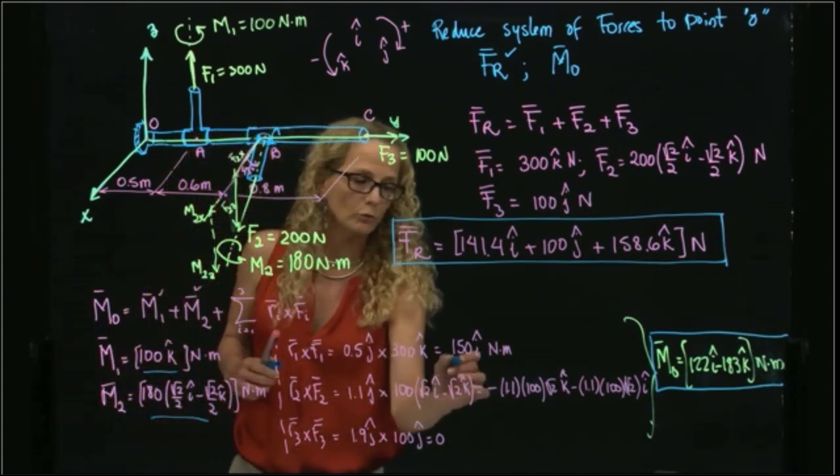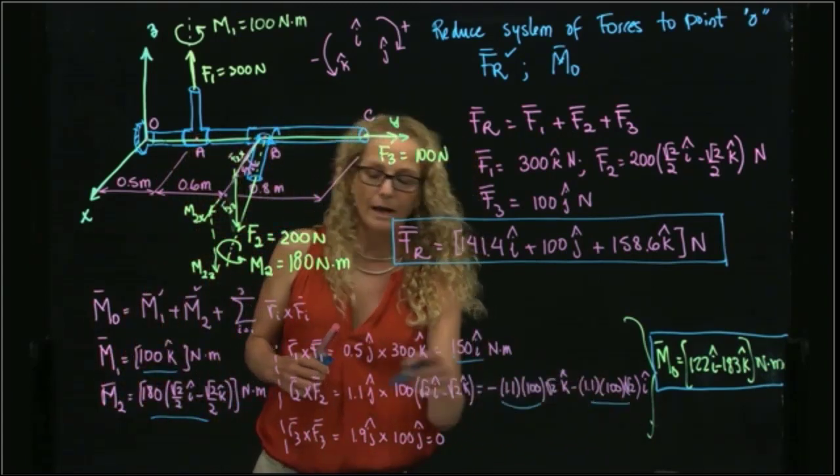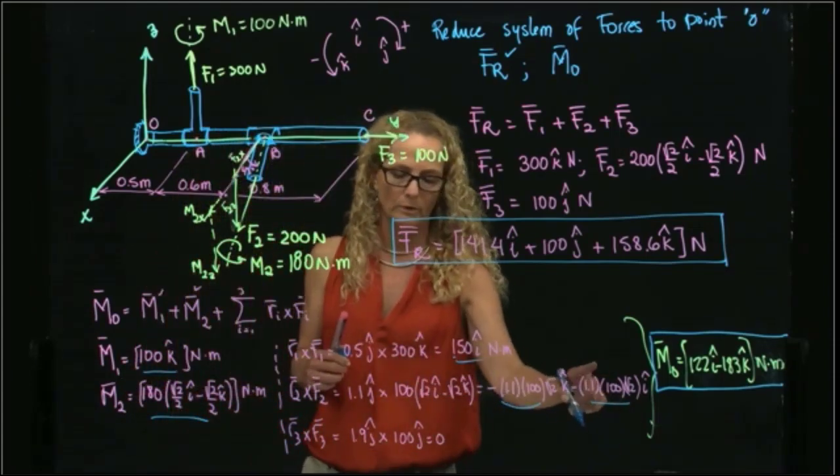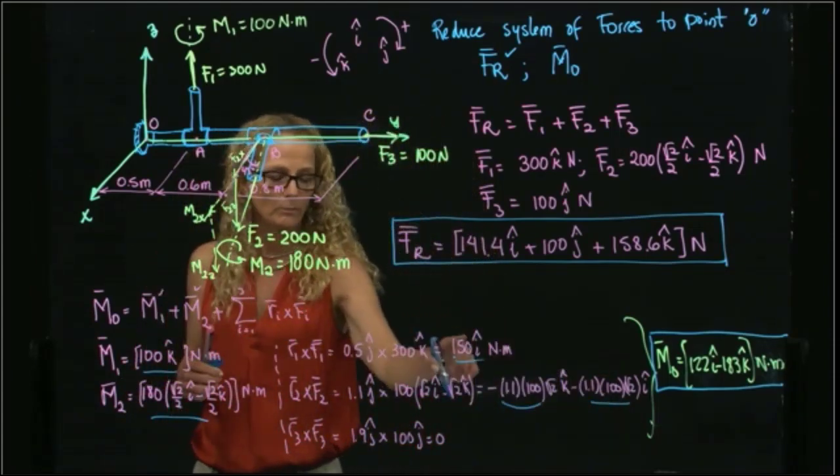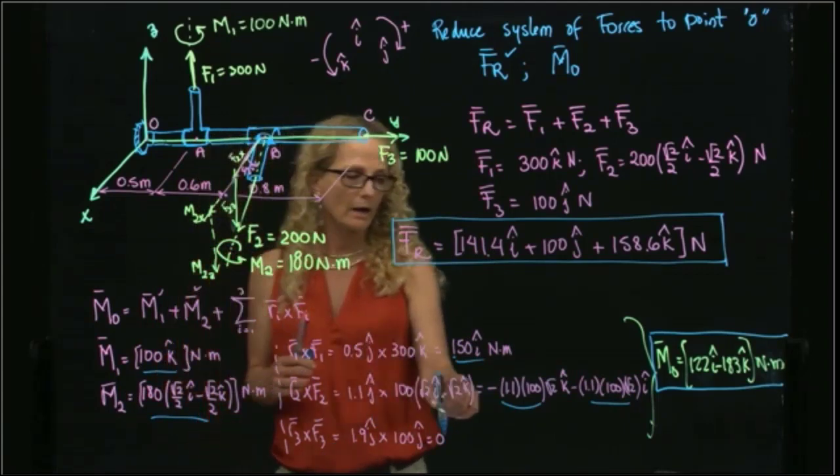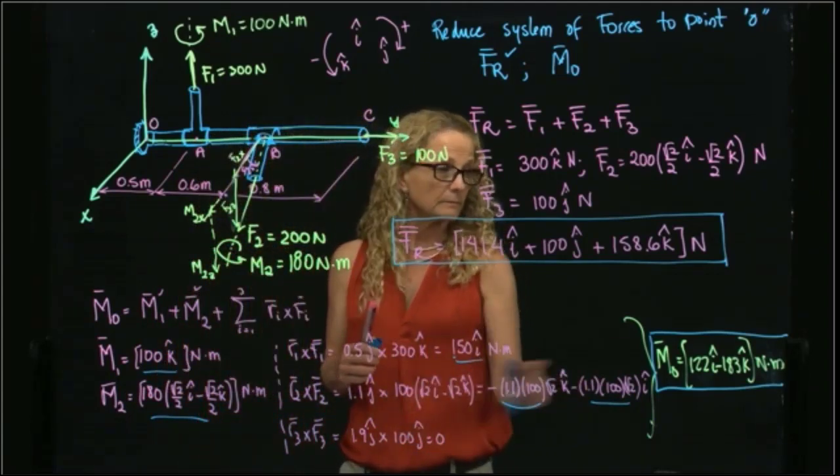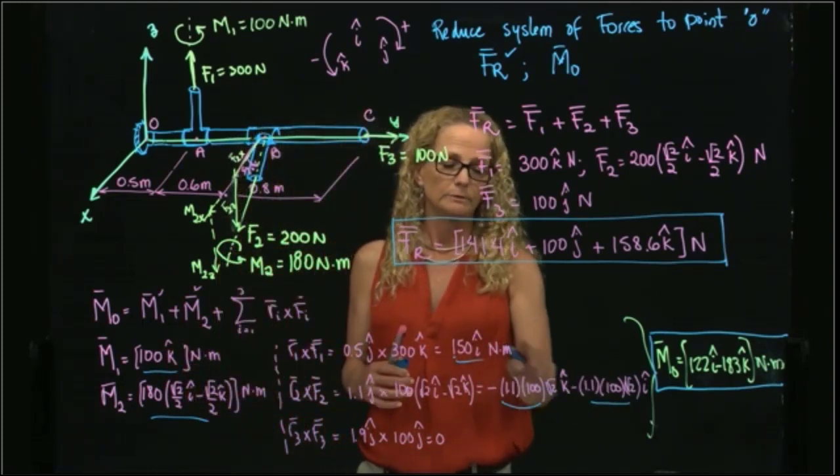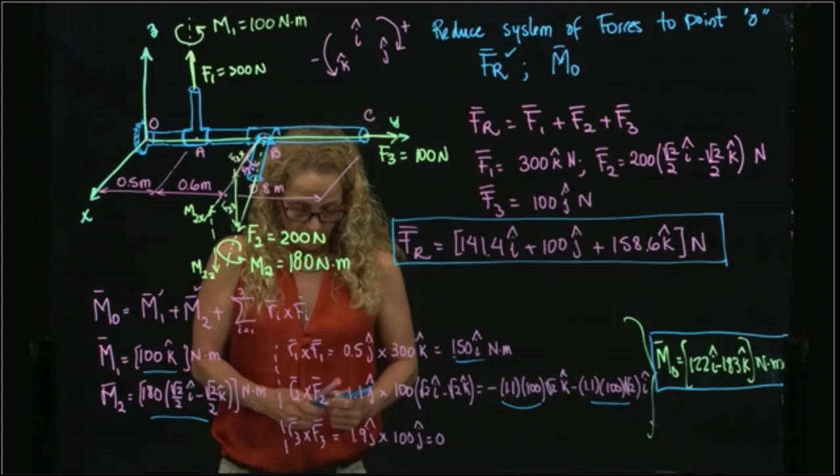Please do your calculations. So I add all the i's. In this case, I have this component plus this component, and then I have this component. Then for the j's, I have none, and then I have for the k's, this one, this one, and this one.